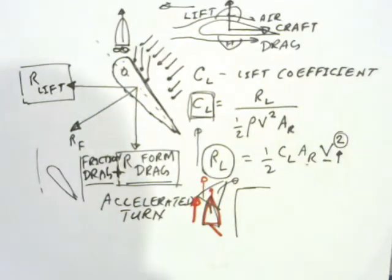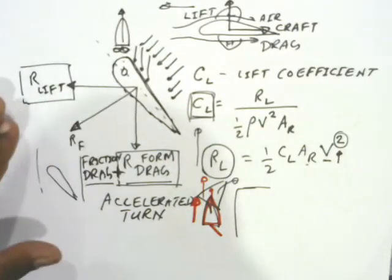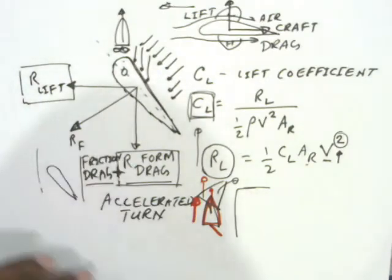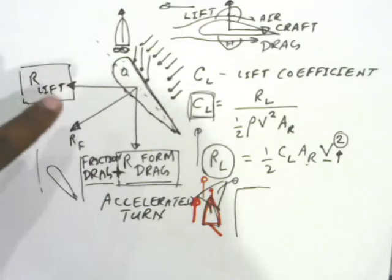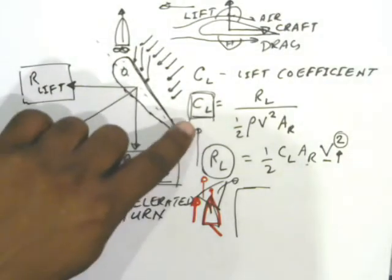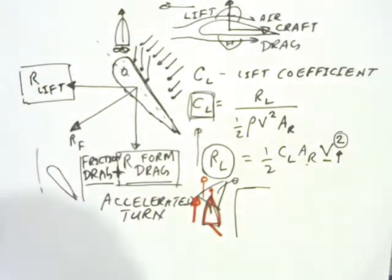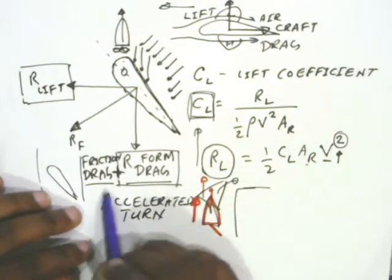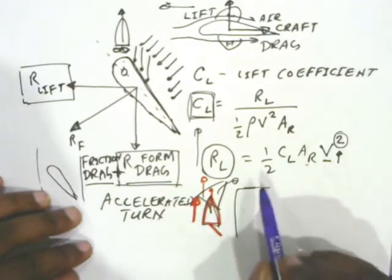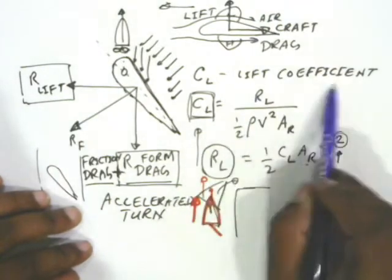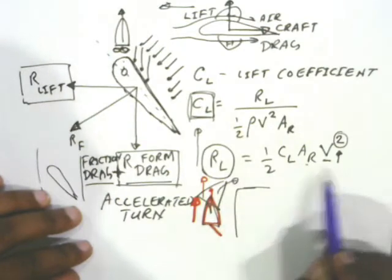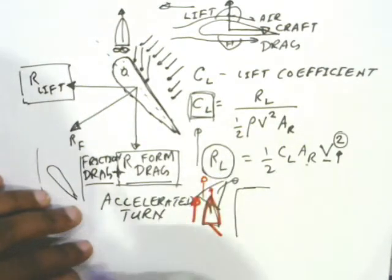Good day and welcome back. In the previous lecture we looked at rudder lift, the resistance acting on the rudder — frictional drag and form drag — and we saw how rudder lift is created. We also saw how the accelerated turn occurs, the reason for it, and the lift coefficient formula used to find the actual rudder lift.